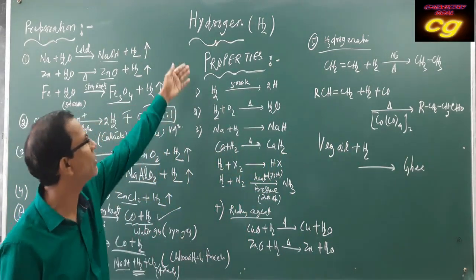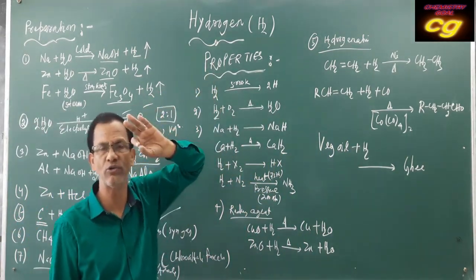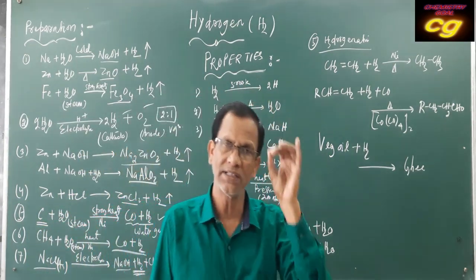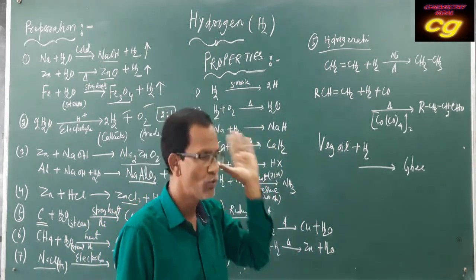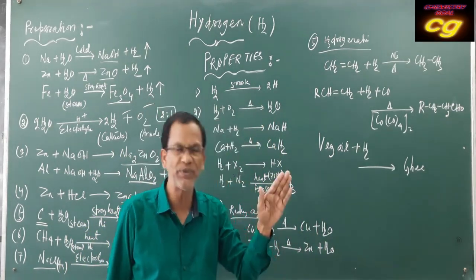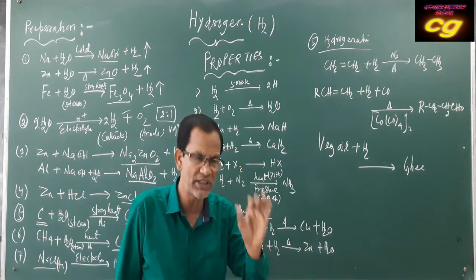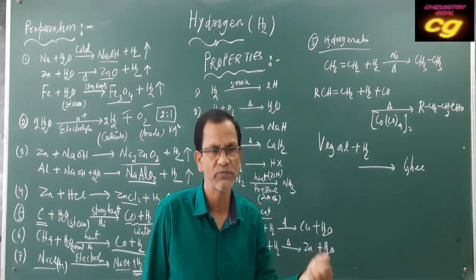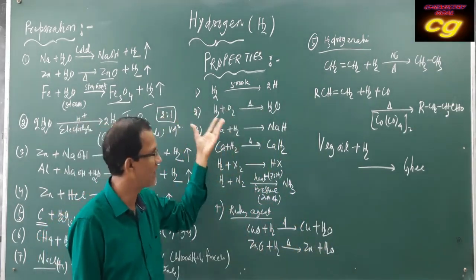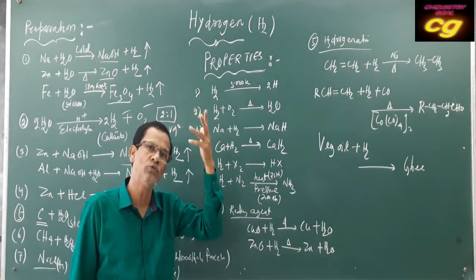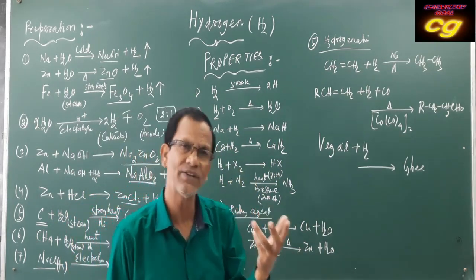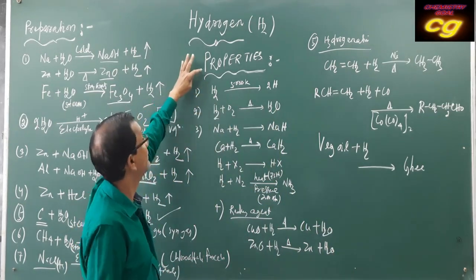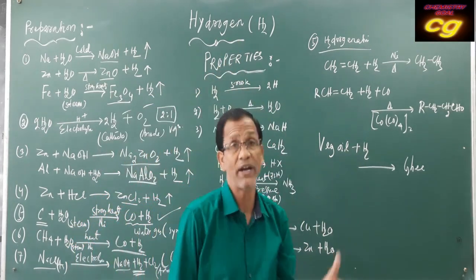Now let us discuss the properties of hydrogen gas. Hydrogen gas is the lightest gas — it is colorless, odorless, and tasteless. There is no physical appearance or observation of hydrogen; only that it is the lightest gas. When you inflate hydrogen gas in a balloon, the balloon goes up because it is lighter than air. Hydrogen is also used as rocket fuel.